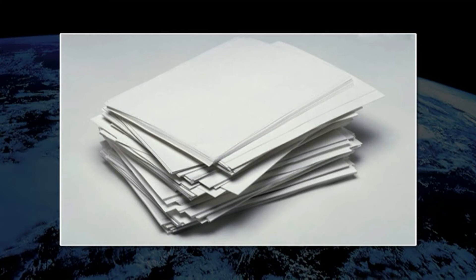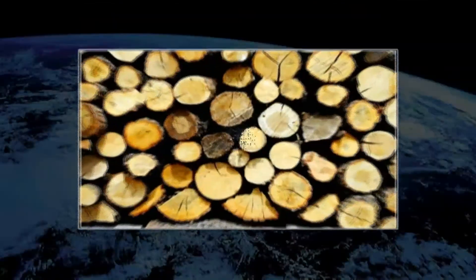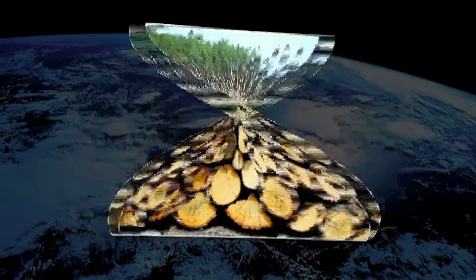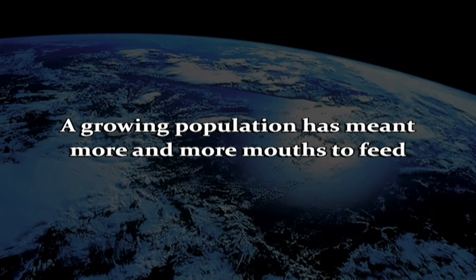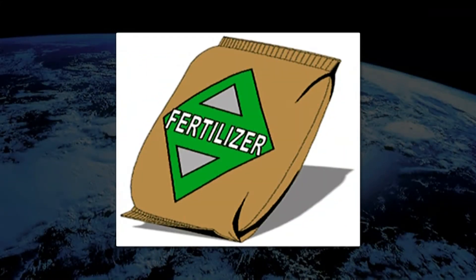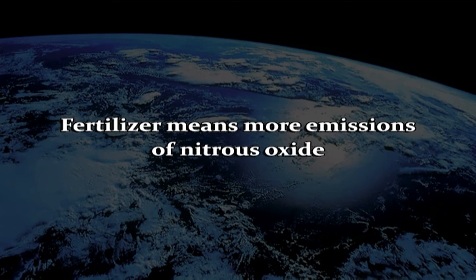We use huge quantities of paper in our work, at school and in offices. Have we ever thought about the number of trees we use in a day? Timber is used in large quantities for construction of houses, which means large areas of forest have to be cut down. A growing population has meant more and more mouths to feed, because the land area available for agriculture is limited. High-yielding varieties of crop are being grown to increase the agricultural output from a given area of land. However, such high-yielding varieties require large quantities of fertilizers, and more fertilizers mean more emissions of nitrous oxide, both from the field into which it is put and the fertilizer industry that makes it.